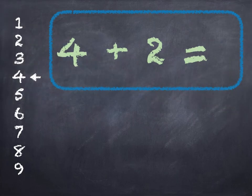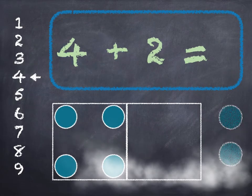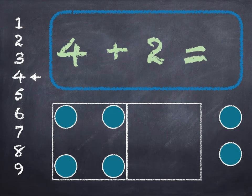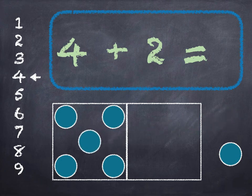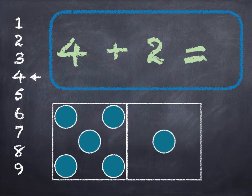4 plus 2. 4 in the box, add 2 on. 4, 5, 6. Start at 4 on the number line and go down 2.